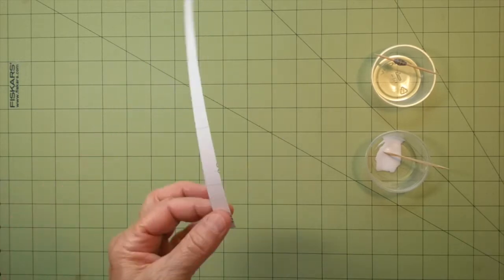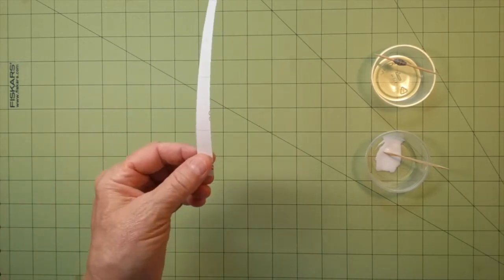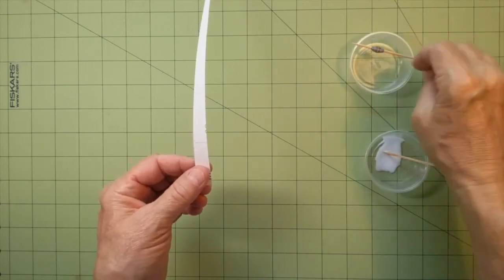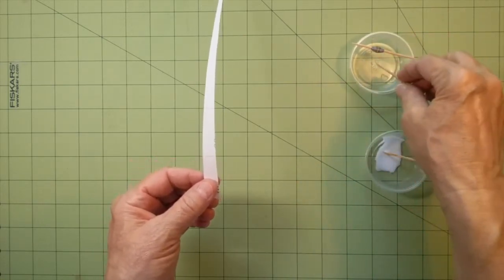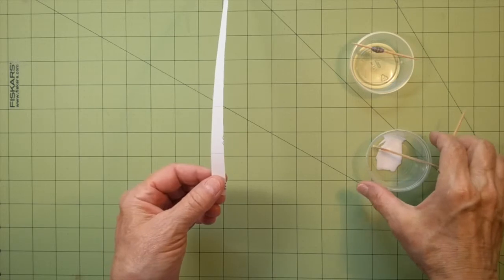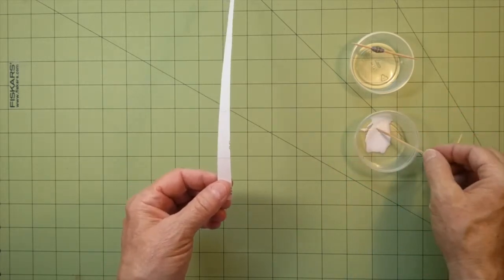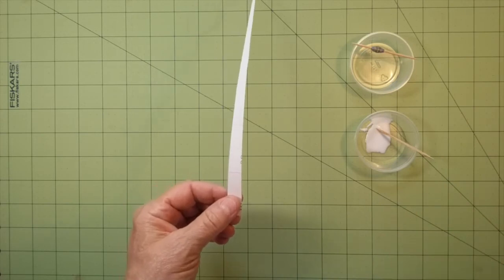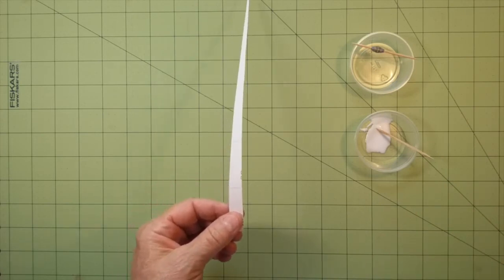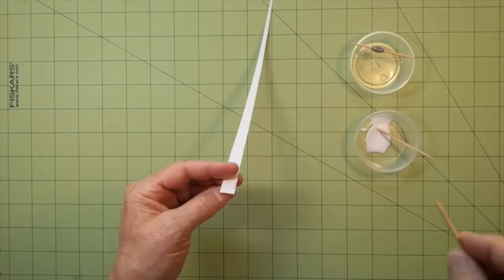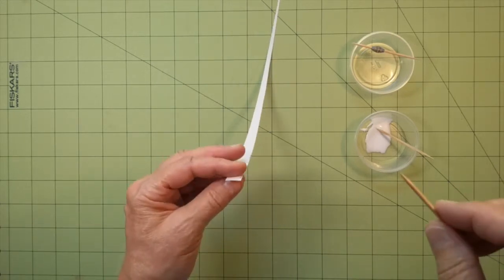Once you have all your strips cut, you're going to start rolling. I have my little drying cup here. It's just a little cup that the toothpick fits across. And I have one bead on there that's already done. And a little container of glue. I watered my glue down just a little bit because it seemed very thick. Because you don't use much glue, that's maybe not that important. But I just want to let you know that that is a possibility.